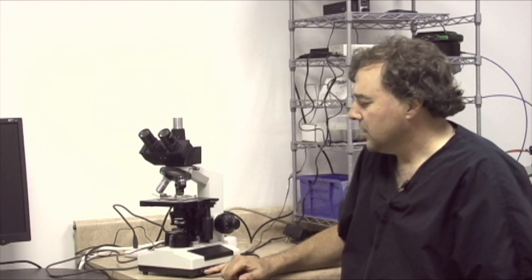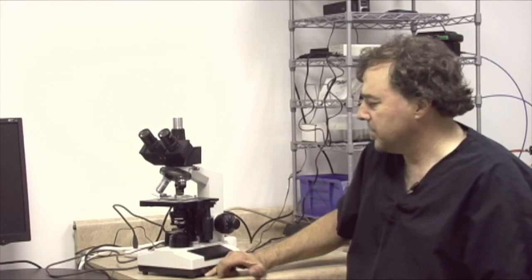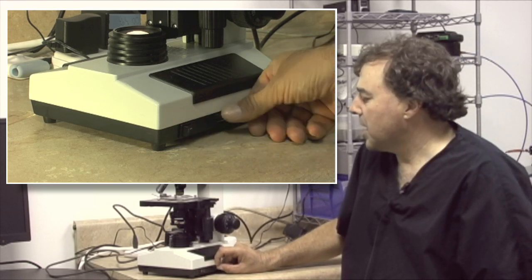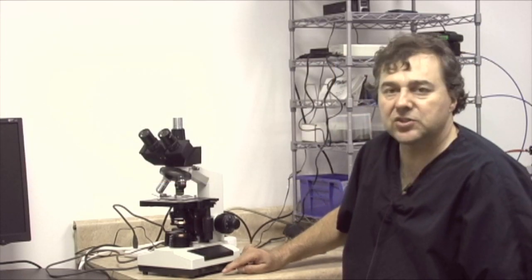On the side of the scope we have an on-off switch for the lamp and we have a rheostat. The rheostat adjusts the amount of light to vary the intensity and gives us good control over it.